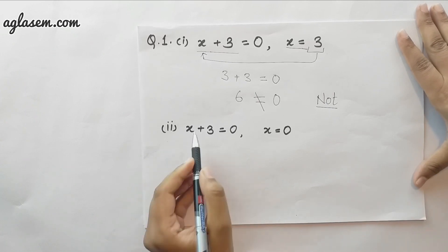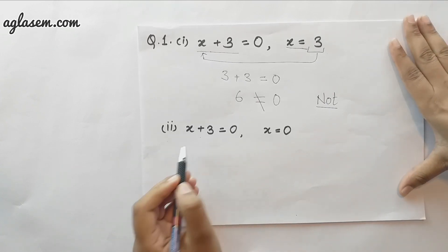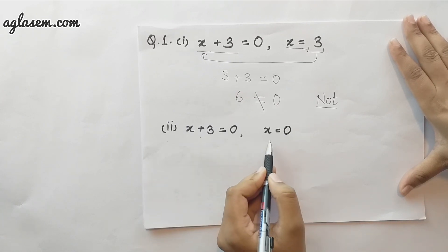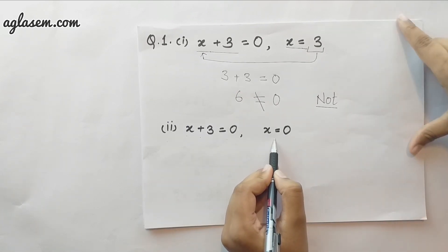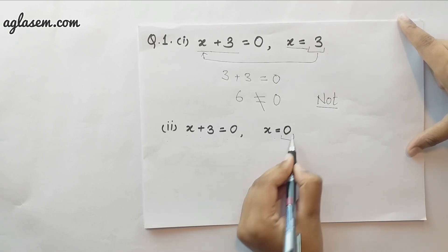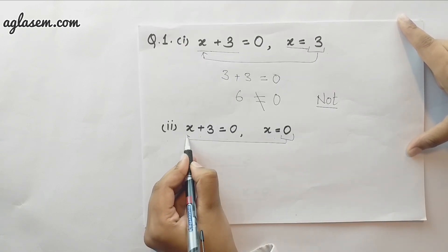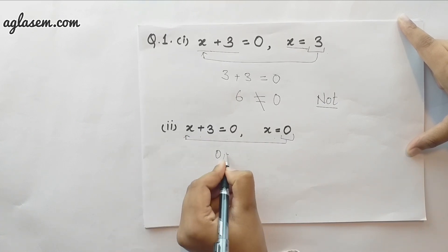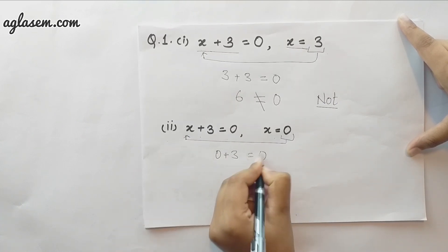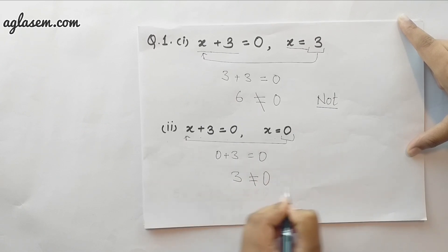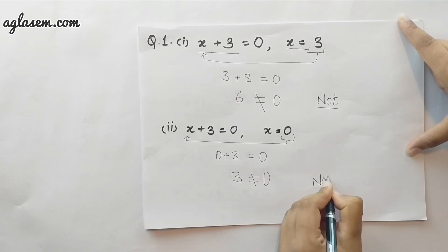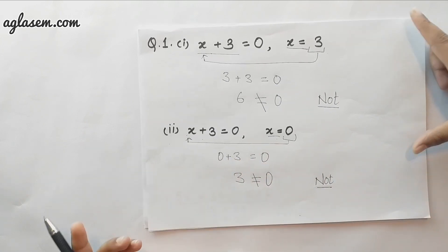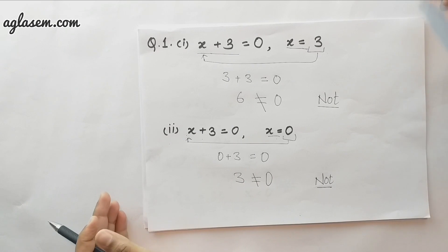In the next question, we have the equation x plus 3 equals to 0 again and the value of x is 0. We put the value into the equation and solve the left hand side: 0 plus 3 equals to 0. 3 is not equal to 0, hence this value of x does not satisfy the equation.